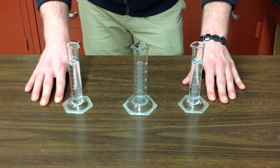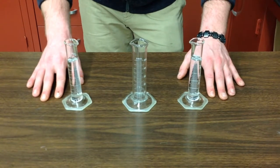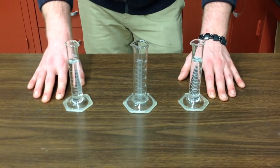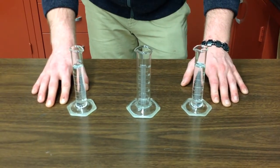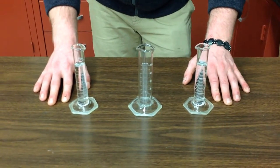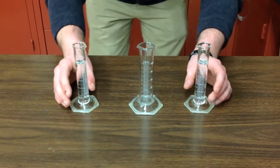Now, if this was an ideal mixture, when we mix these two together, we should just have a total of 50 milliliters. Because the interactions between the two liquids should be the same and thus take up the same volume. But, let's just see what happens when we mix the two.